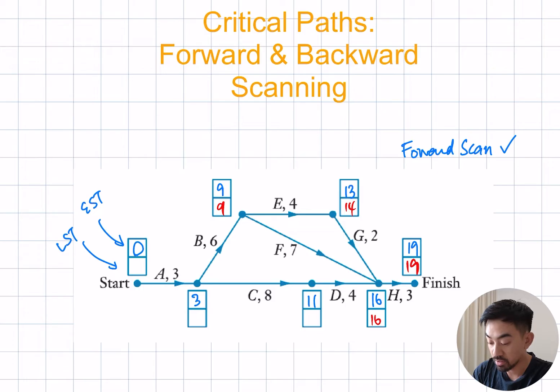Moving my way down here, 16 minus 4 is 12. Now I have a clash again. 9 minus 6 is 3, and 12 minus 8 is 4. So obviously that will be 3. And then lastly 3 minus 3 is 0. Okay, so that is done.